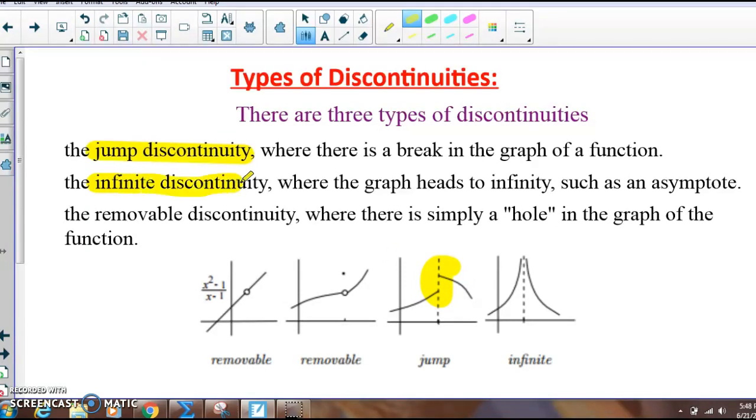Then there's an infinite discontinuity. Sometimes the jump and the infinite are put together, but the infinite one I feel is a little bit more descriptive. An infinite discontinuity is when the function is approaching infinity from either the left or the right, so it's creating an asymptote. And then we have what's called a removable discontinuity, which is really just that hole in the graph where it's like you took a point and removed it. Sometimes you put it someplace else, like on this one, and sometimes it's just missing.